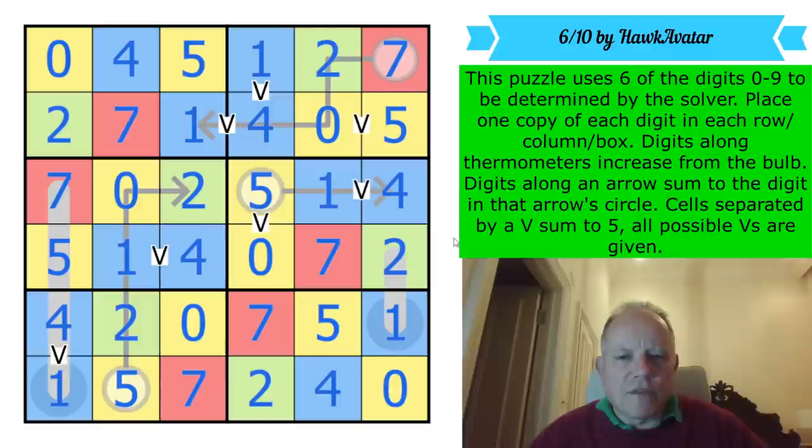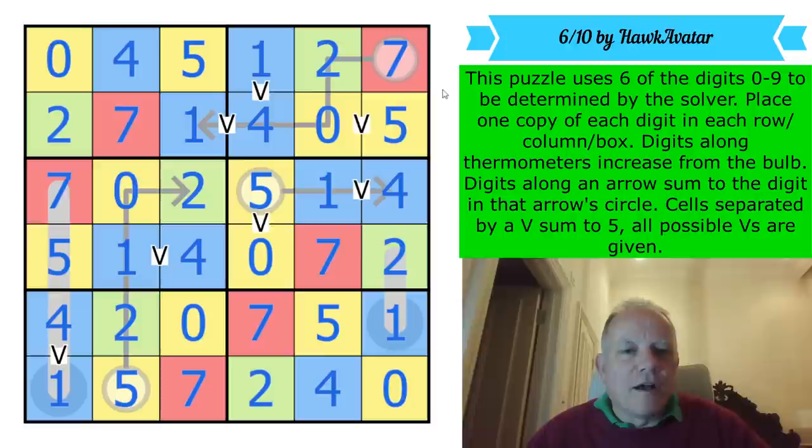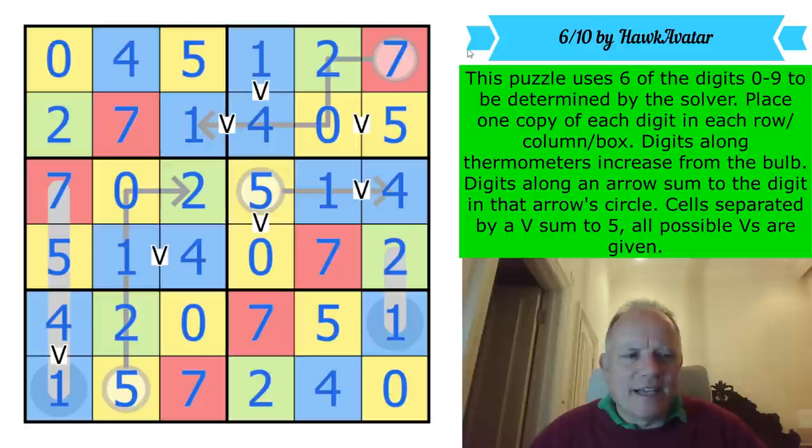And that is the solution to a very clever puzzle. I don't think pressing the tick will work today. No, it doesn't. It says it doesn't look right. It is not used to a puzzle that uses zero, one, two, four, five, and seven, as it's six out of ten digits. But that's a very clever puzzle by Hawke Avatar. I really enjoyed that, and it messed with my brain quite considerably. But I think that was lovely. So there we go. Hope you had fun with that one, or watching me struggle with it. And I hope to see you again on the channel very soon. Bye for now.